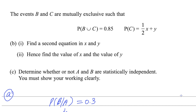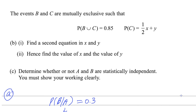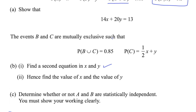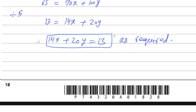For the next part: events B and C are mutually exclusive, so probability of B intersection C is 0. Probability of B union C equals 0.85 and probability of C equals (1/2)X plus Y. We need to find a second equation in X and Y using this information.